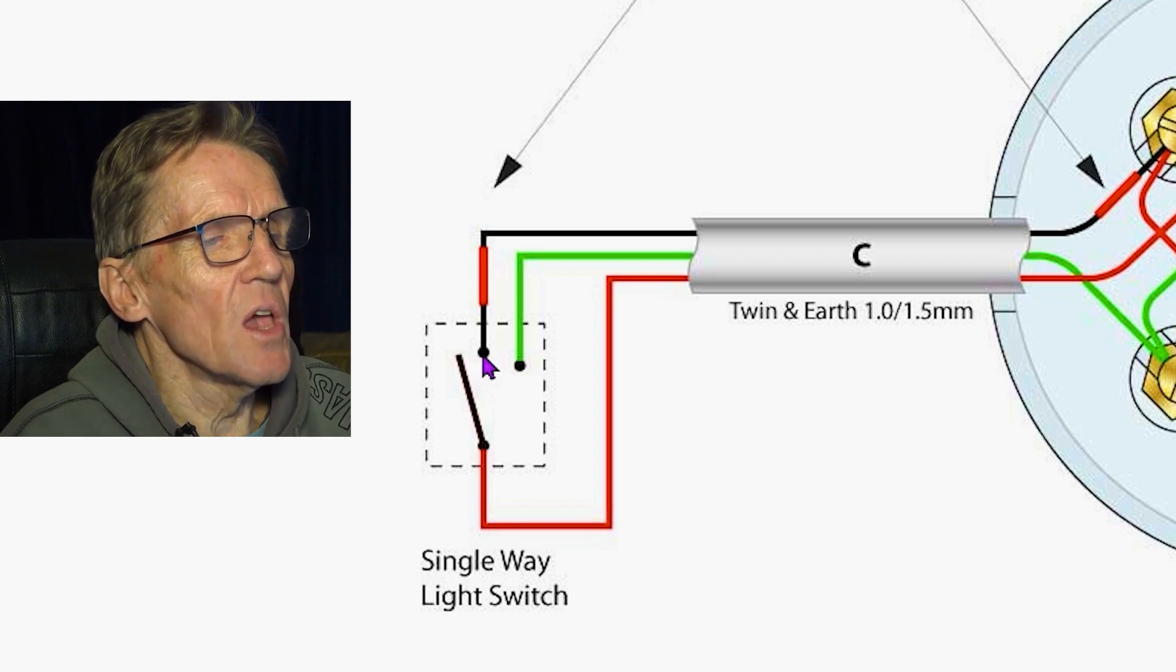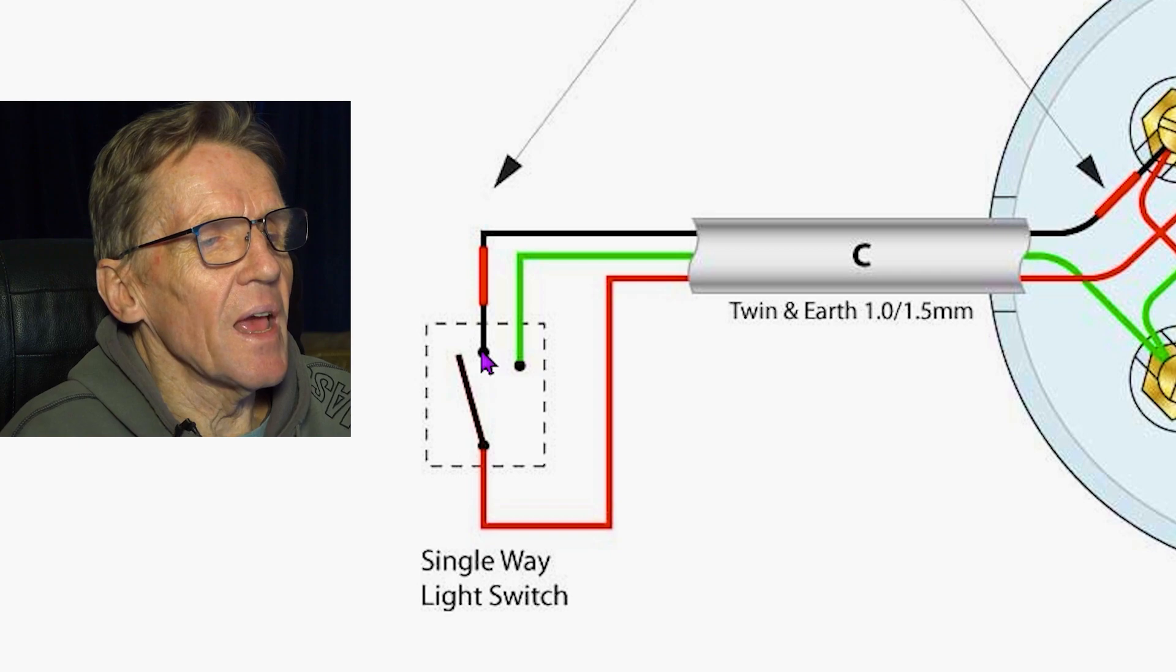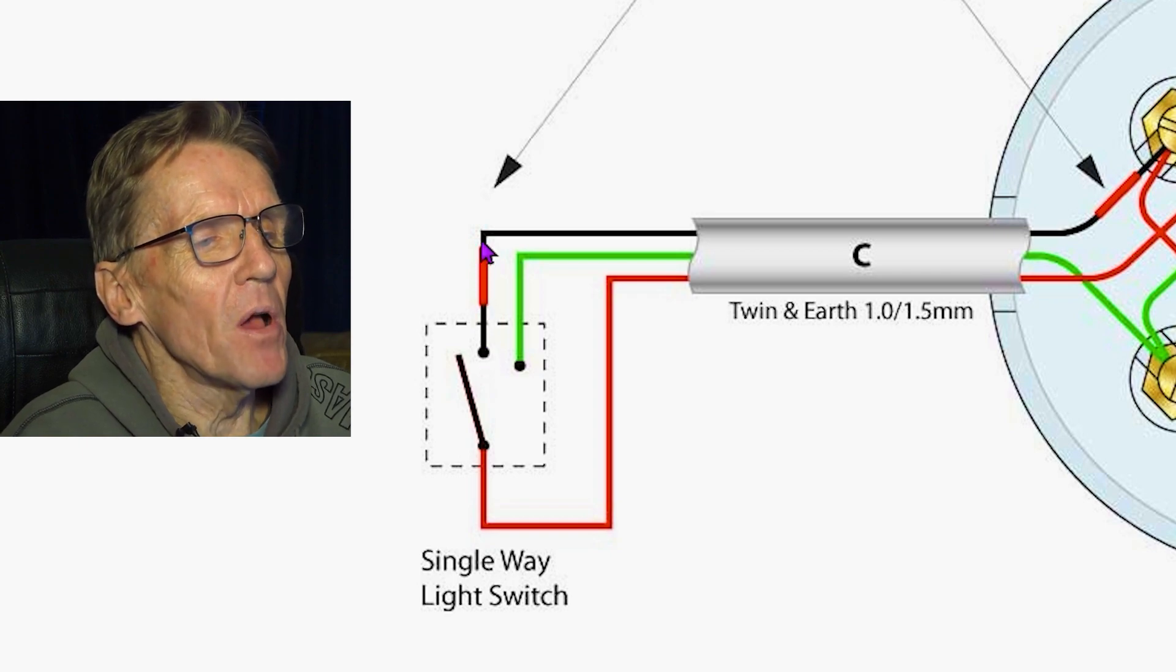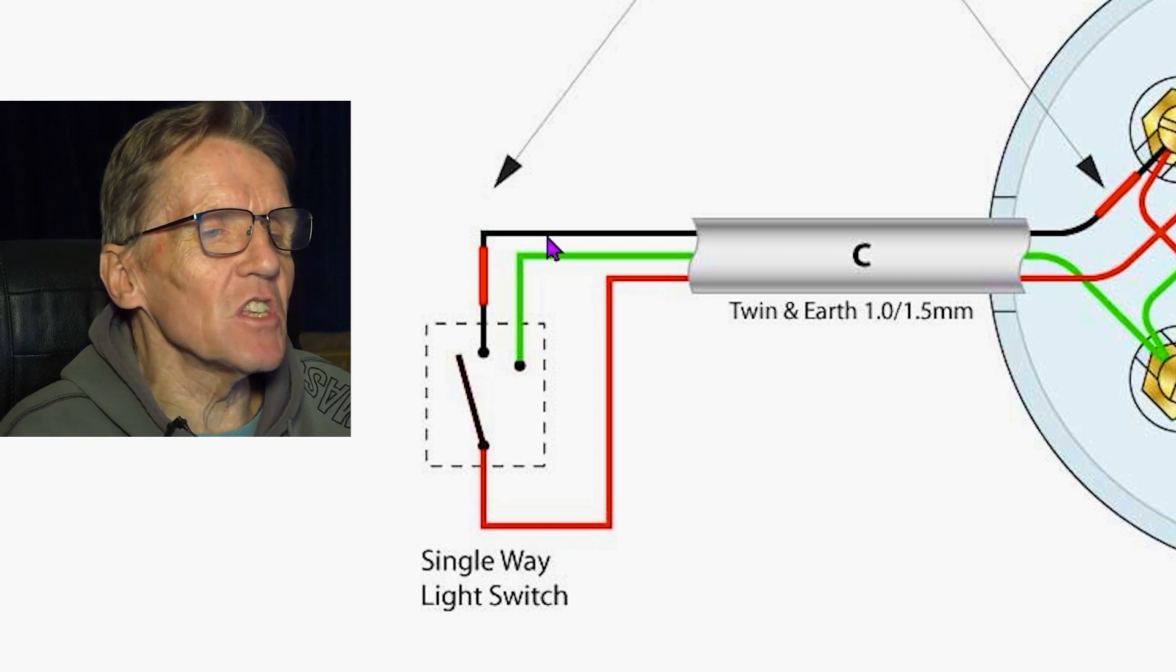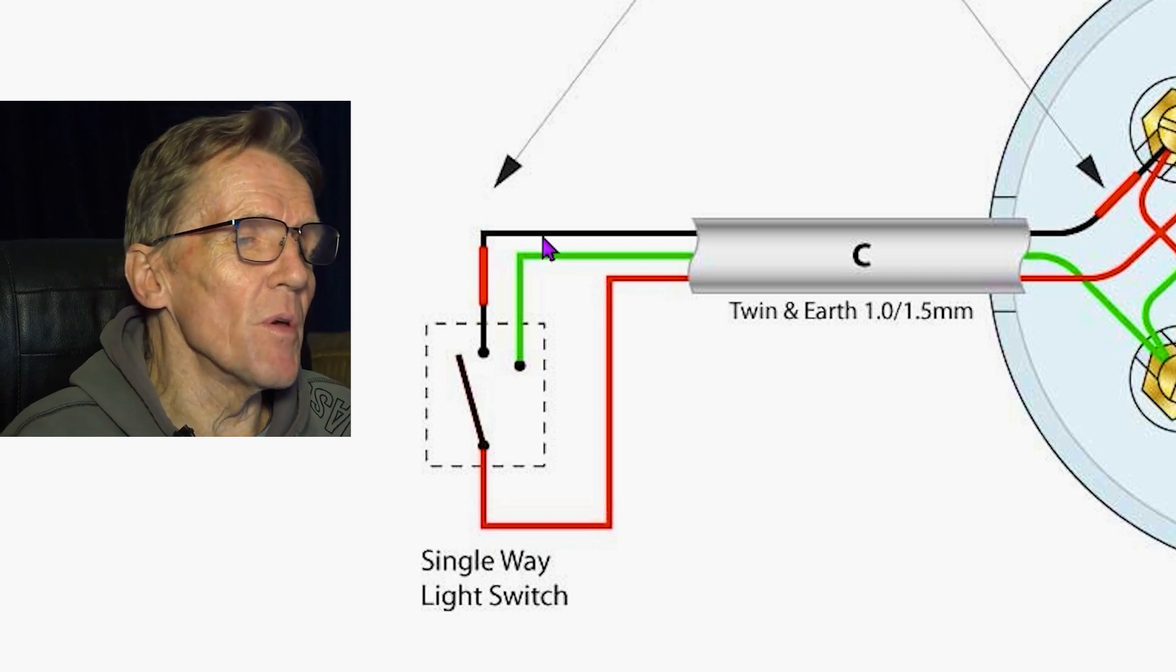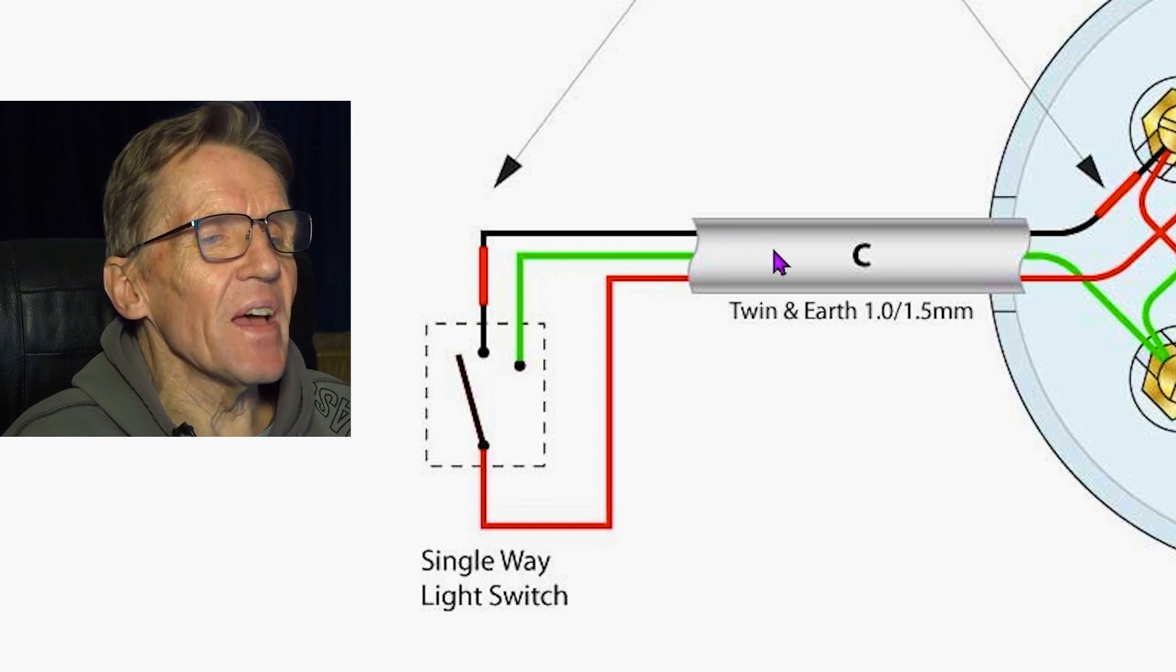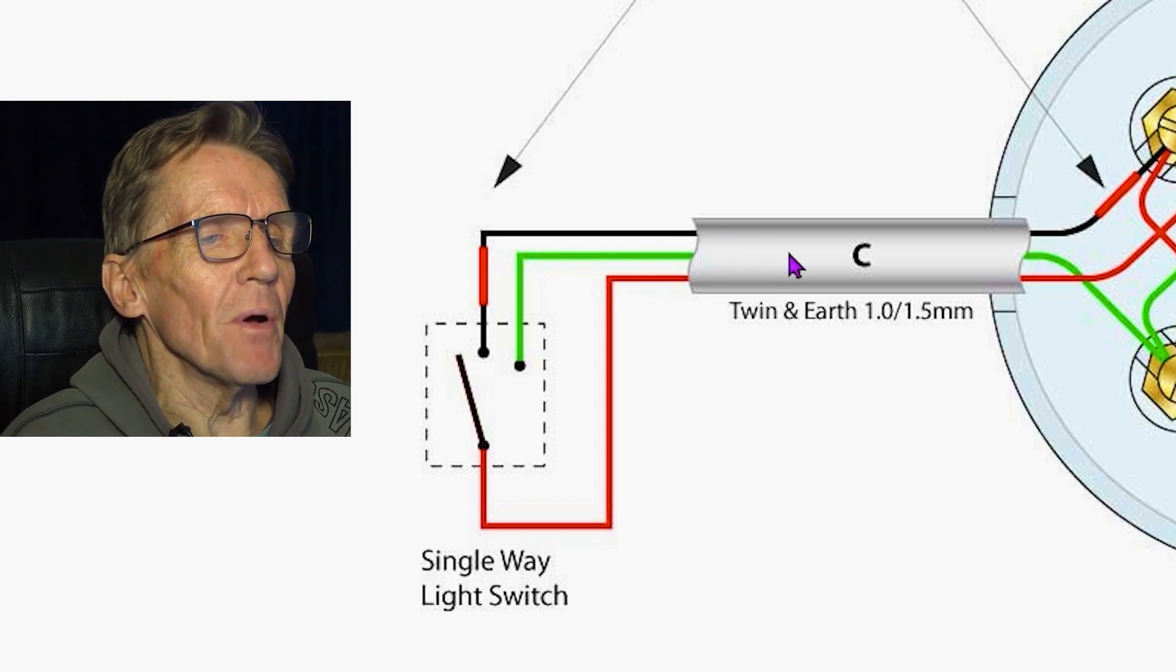When that switch goes across, it makes the circuit, and at this point we've got a live going back up on the black wire. Now the reason it's black is because the cable comes either with a brown and a blue or a black and a red as it used to be, and that's the kind of cable we're using.